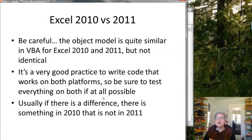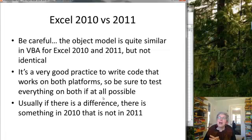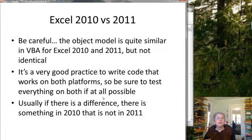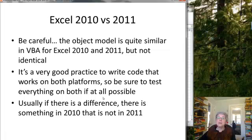Another thing to watch out for: the object models are quite similar for Excel 2010 (the Windows version) and 2011 (the Mac version), but they're not identical. I think it's an extremely good practice to write code that will work on both platforms, so you have to be aware of this issue and, if possible, test everything on both. Usually if there's a difference, there will be something in the 2010 Windows version that's not available in 2011. Be careful and test thoroughly, just like writing a web application where you'd test it in a whole bunch of web browsers.